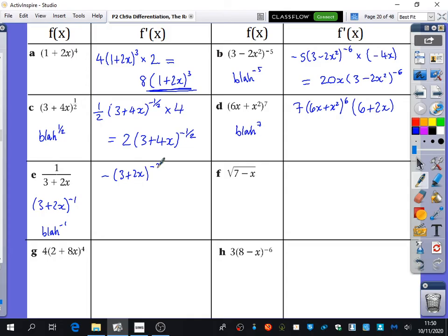And we also need to multiply this by 2, because the derivative of this thing in here is 2. So I would probably rewrite this as minus 2, 3 plus 2x to the power of minus 2.